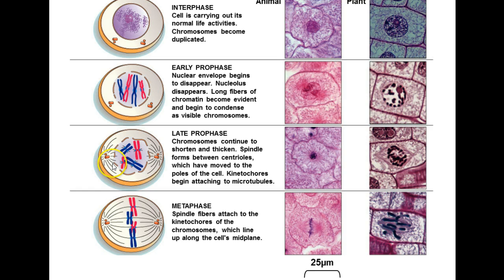Moving to metaphase — meta means middle — and the chromosomes are lined up around the middle of the cell, or another way of saying that, around the equator of the cell. Keep in mind the cell is a three-dimensional structure, so the chromosomes really aren't forming just a straight line across the center, but they're forming a ring around the equator of the cell. We see the spindle fibers attached to the chromosomes going back to either end of the cell.